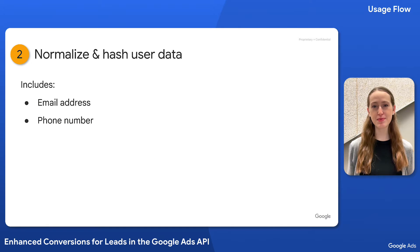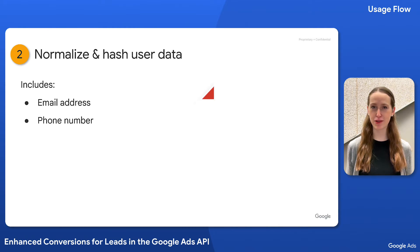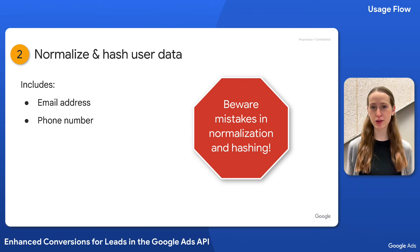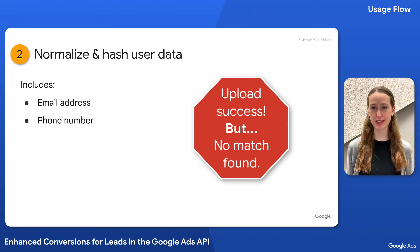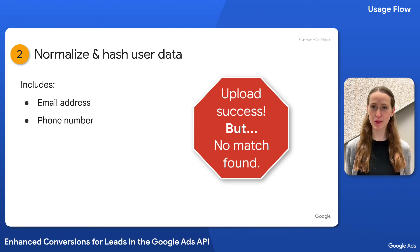The first step to upload enhanced conversions for leads is to normalize and hash your first-party user identifiers, which can include email address and phone number. If you don't properly normalize and hash the user data before sending it to the Google Ads API, you won't necessarily see errors in your response. Instead, the upload could succeed, but Google Ads won't find a match for the data you uploaded, leading to fewer reported conversions. For that reason, this step is especially important to get right.